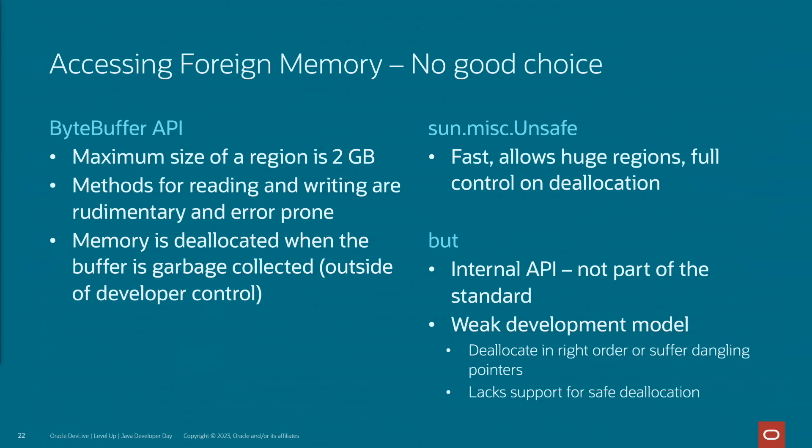sun.misc.Unsafe is an internal JDK API which gives you all the control you could possibly want, and probably a lot more than what you wanted. As the name implies, it is unsafe. You're using a non-standard API, which means it's not guaranteed to remain the same in some future version of the platform. You also won't get any help from the platform in deallocating memory. If you get it wrong — and it's quite easy to get it wrong — you can have unexpected errors including not just the JVM crashing, but also silent memory corruption.